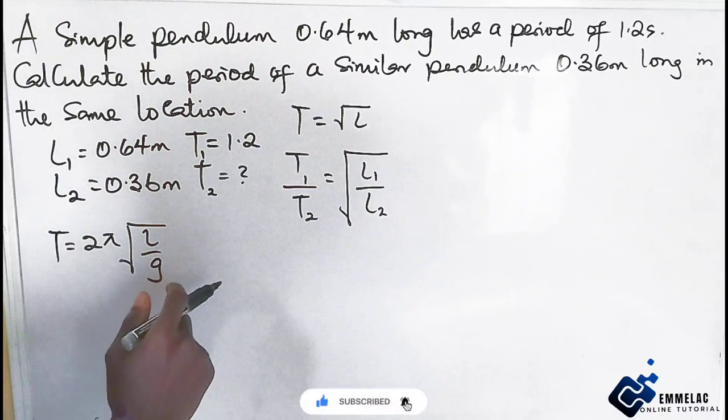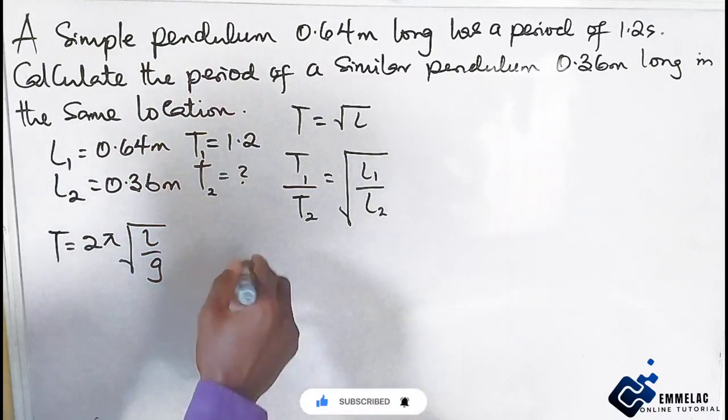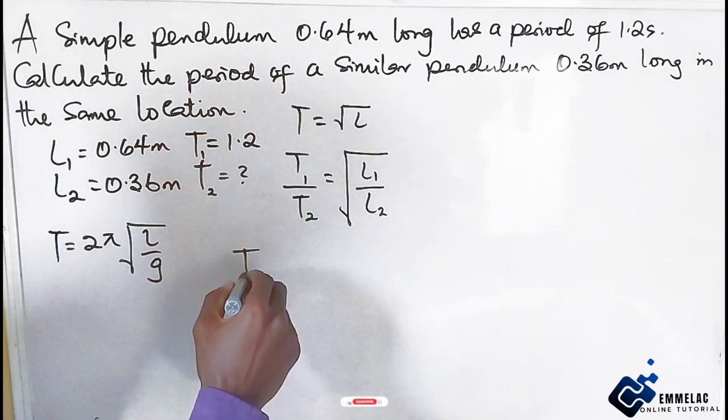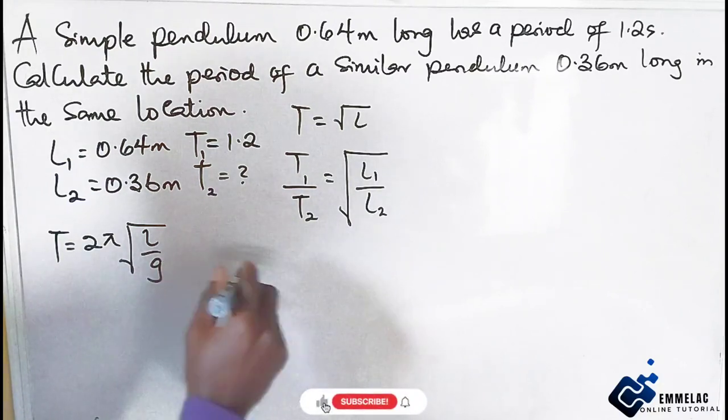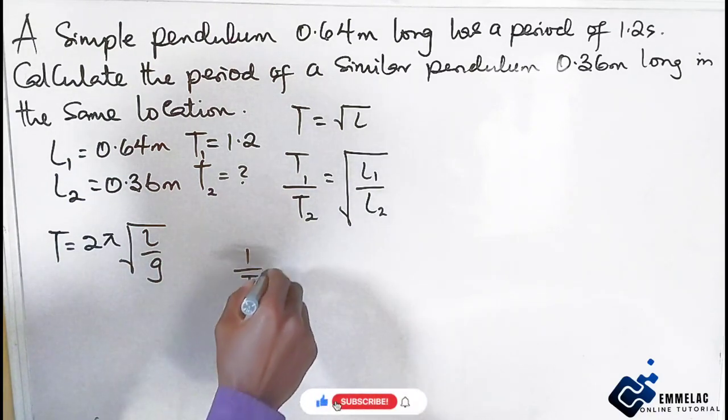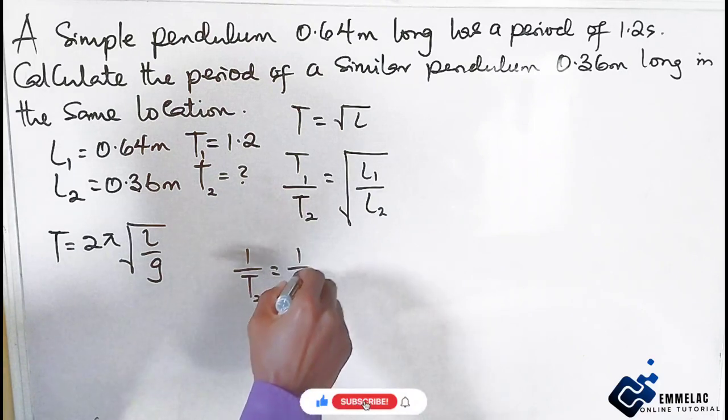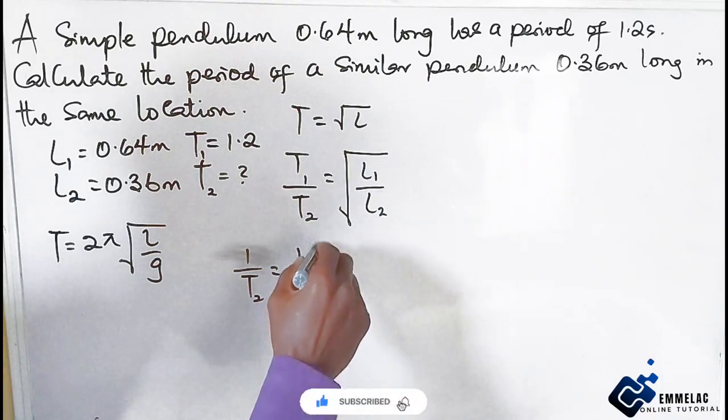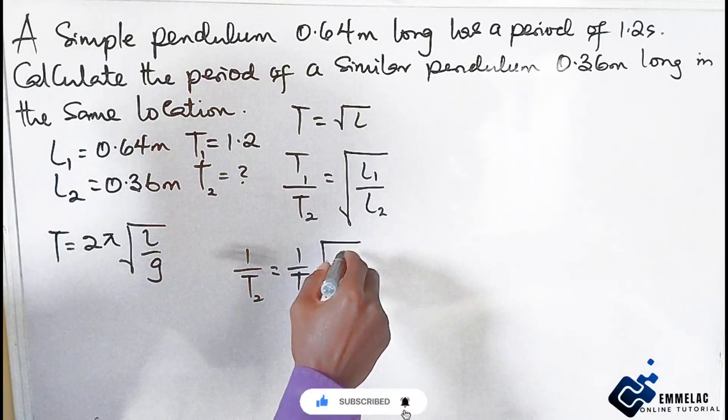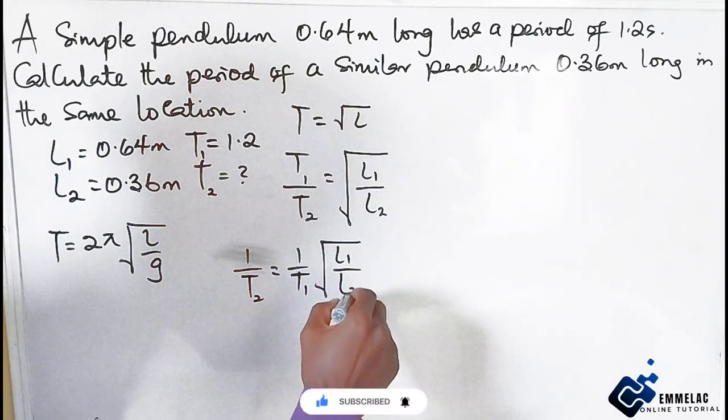Here we can see that 1 over T2 equals 1 over T1 times the square root of L1 over L2.